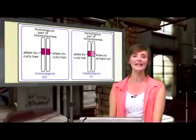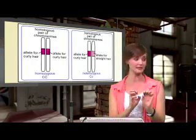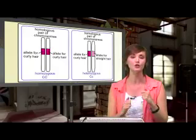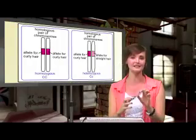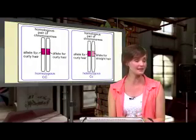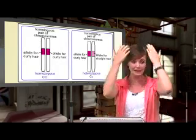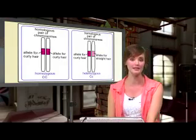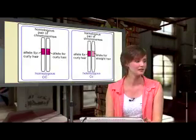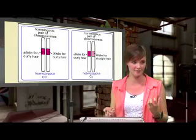Recessive. In a homozygous pair of chromosomes — both capital C or both lowercase c — you will see with your eyes on the outside what those letters are telling us. If they are both capital C for curly hair, you will see curly hair. If they are both lowercase c for straight hair, you will see straight hair. When we have a heterozygous pair, capital C and lowercase c, which one are you going to see? The capital letter — which is curly. So you will have curly hair.